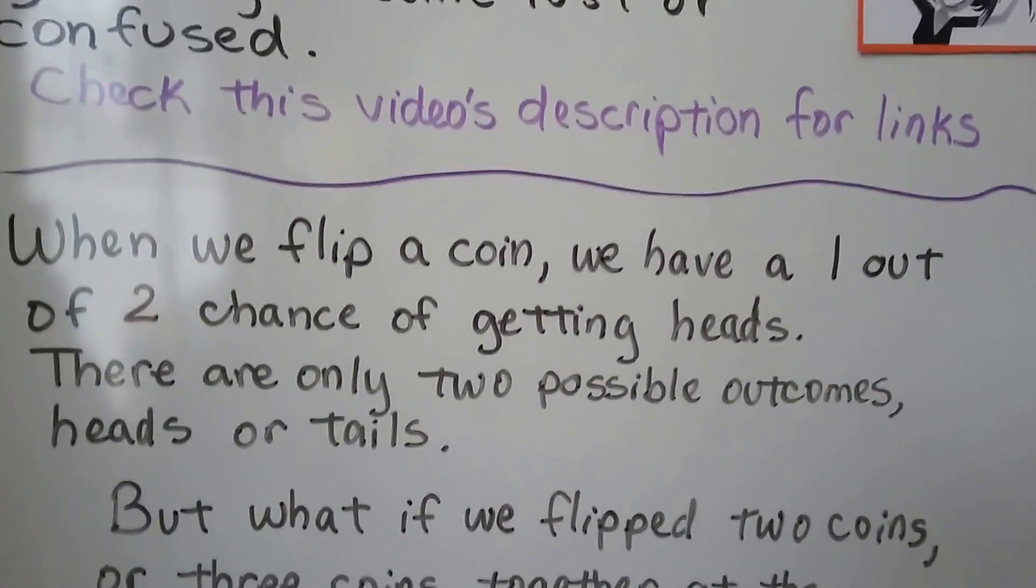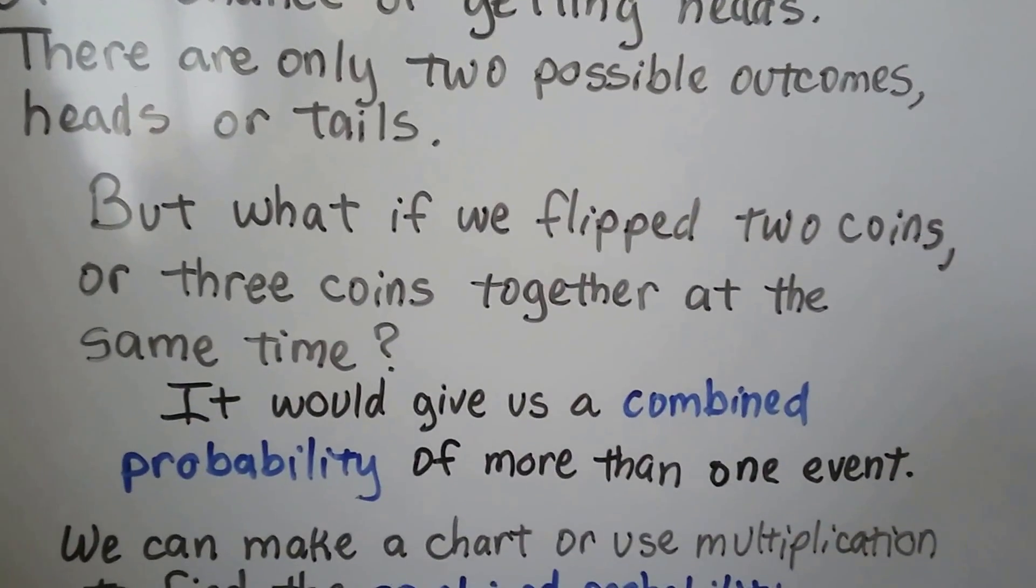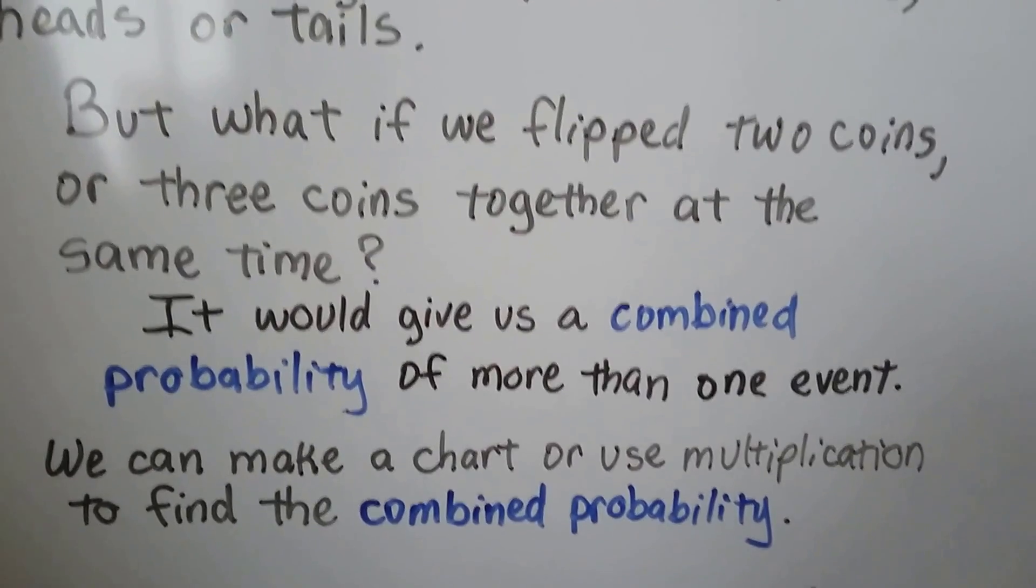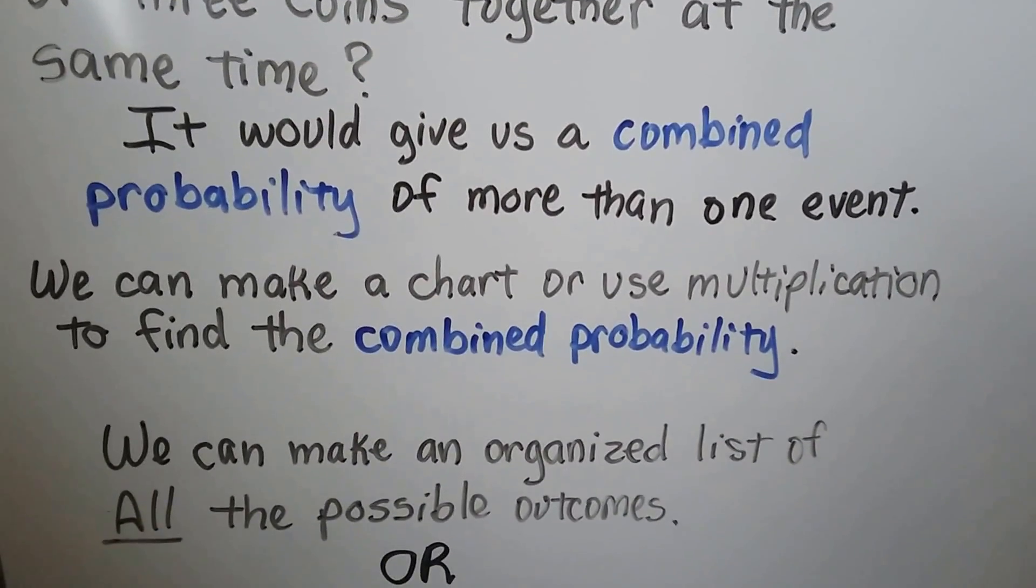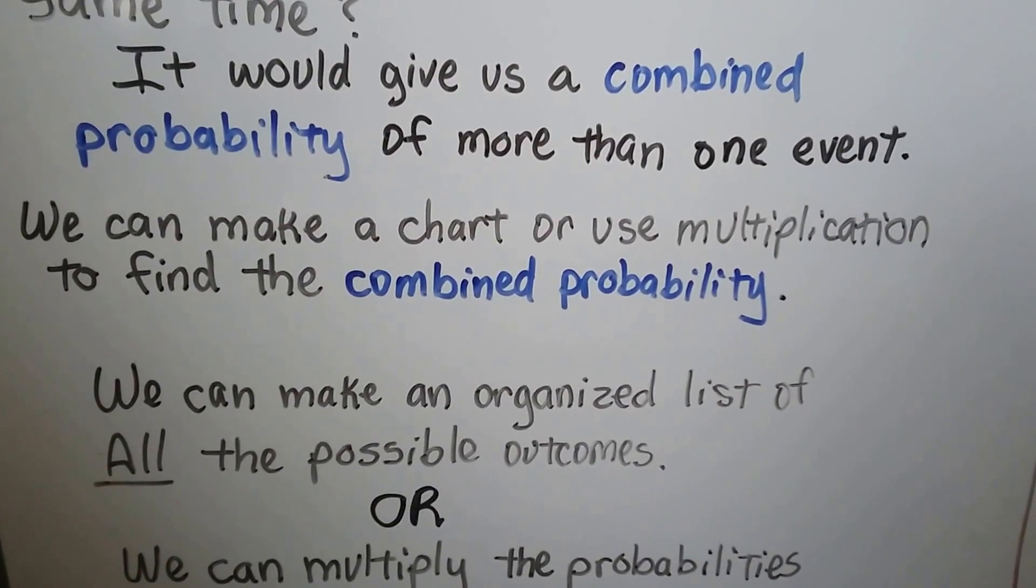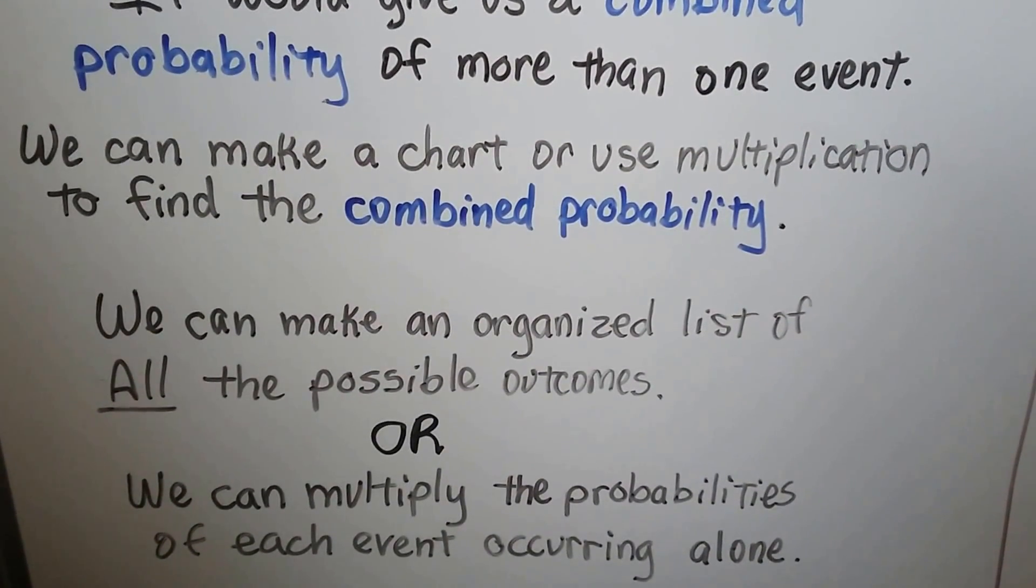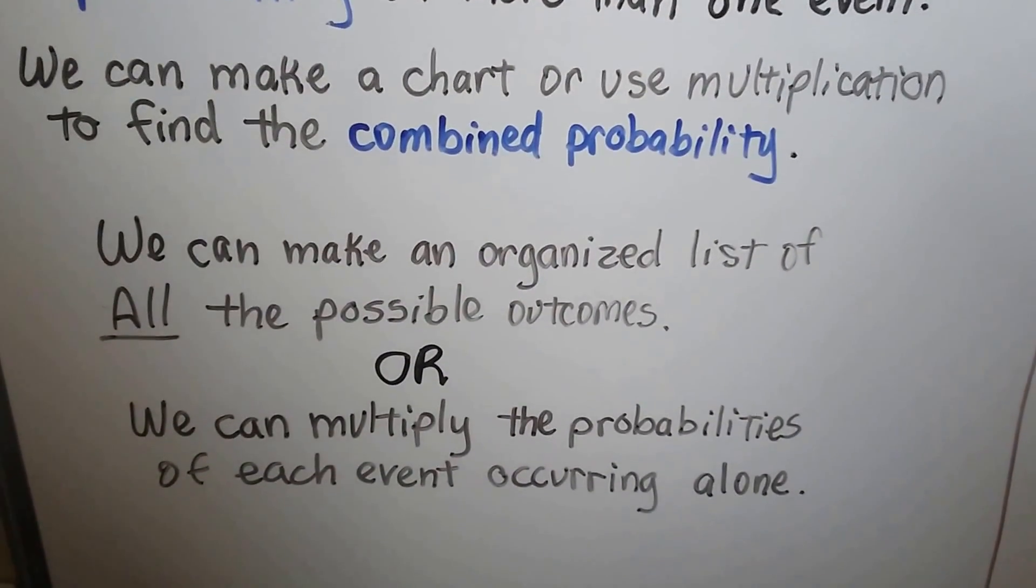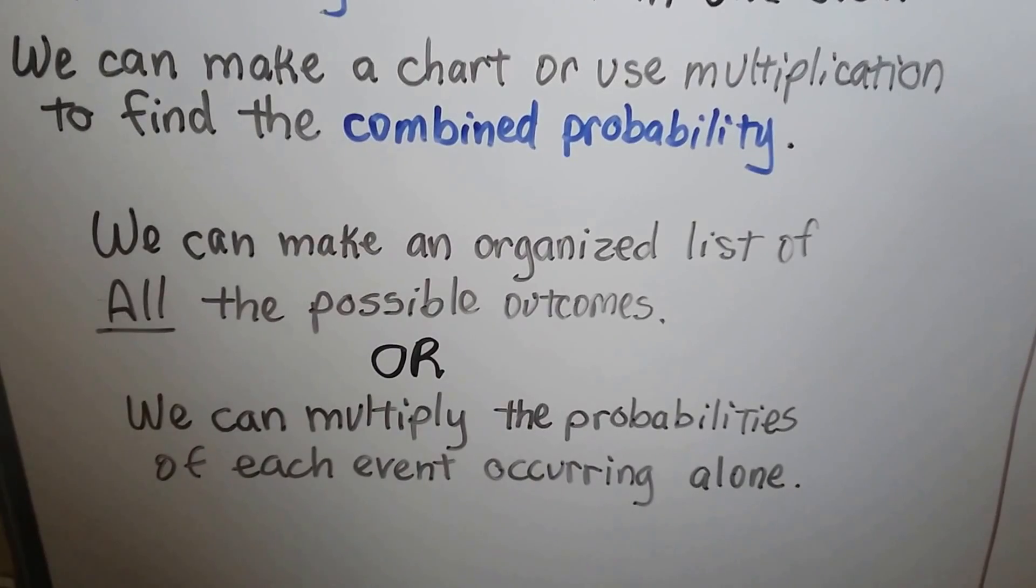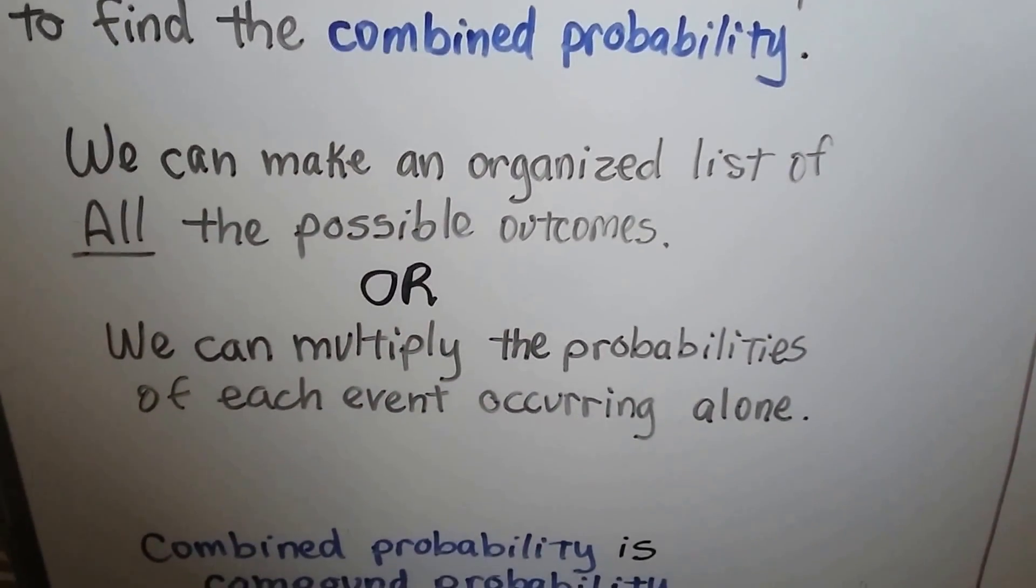When we flip a coin, we have a one out of two chance of getting heads. There's only two possible outcomes, heads or tails. But what if we flip two coins or three coins together at the same time? It would give us a combined probability of more than one event. And we can make a chart or use multiplication to find the combined probability. We can make an organized list, that's the chart of all the possible outcomes, or we can multiply the probabilities of each event occurring alone.